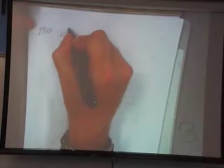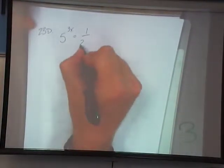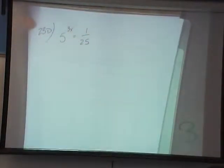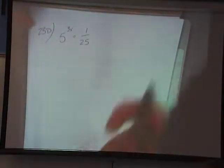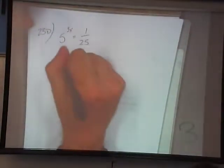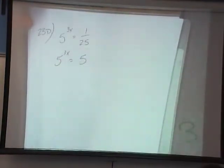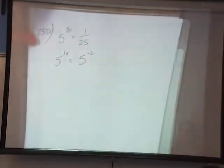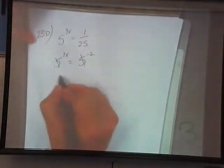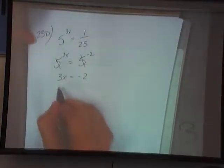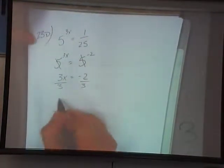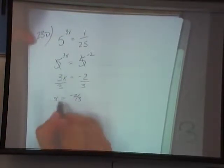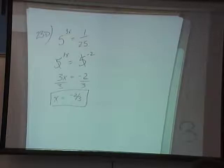5 to the 3x equals 1 over 25. 5 to what power is 1 over 25? Negative 2. Very good. Drop the bases. So x is equal to negative 2 thirds. Of course that's on 23.